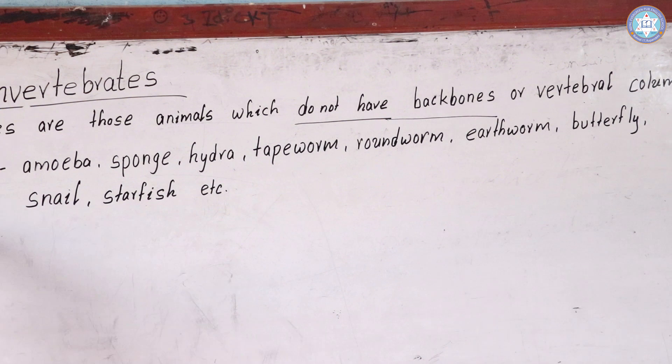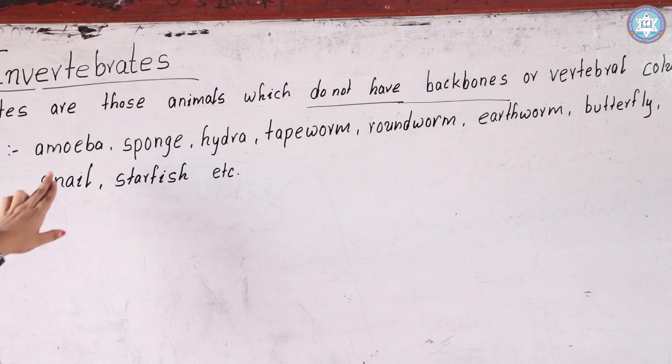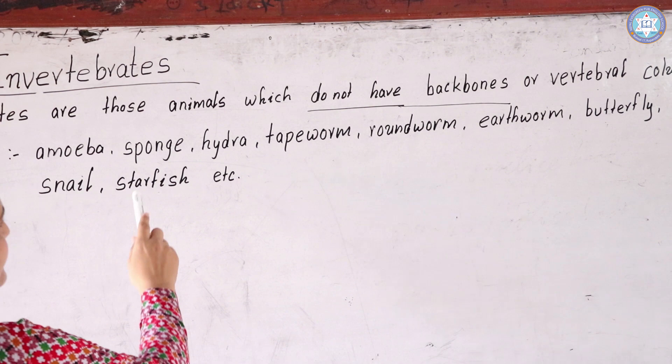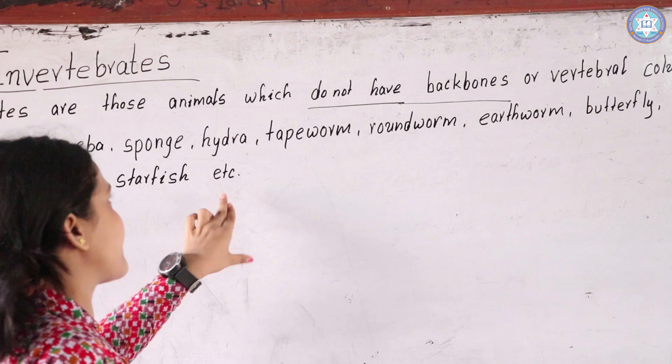Let's look at some examples of Invertebrates. First is Amoeba — a unicellular animal, meaning it is made of only one cell. Then Sponges, Hydra, Tapeworm, Roundworm, Earthworm, Butterfly, Snail, Starfish, etc. These are the examples of Invertebrates.